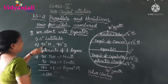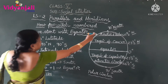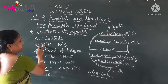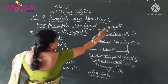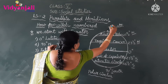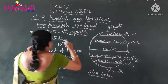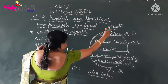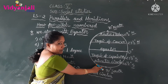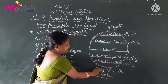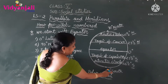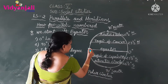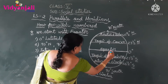Now coming to the north pole and the south pole. The north pole is marked as 90 degrees. This is what the degrees symbol looks like. The north pole is 90 degrees and the south pole is also 90 degrees.